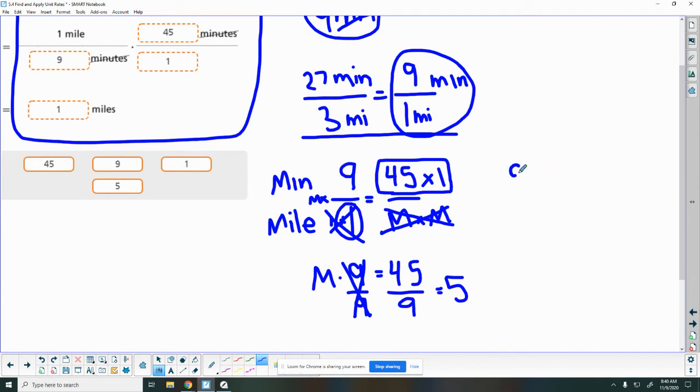So I know in 9 minutes I can go 1 mile, and I want to see in 45 minutes how many miles I can go. So essentially what we did here, after we moved this, moved this, so everything went back and forth, back and forth.